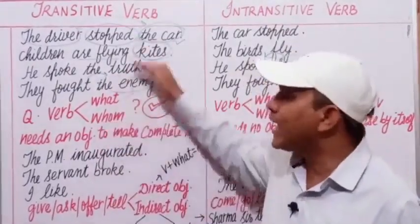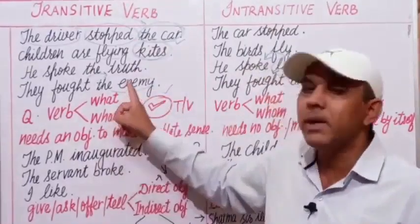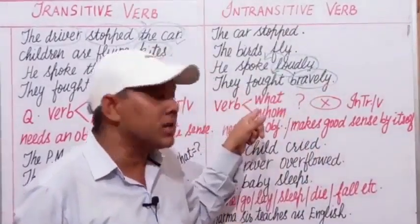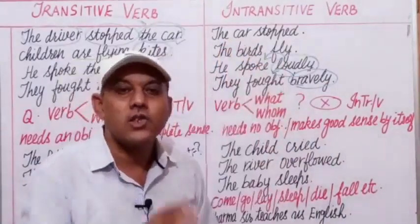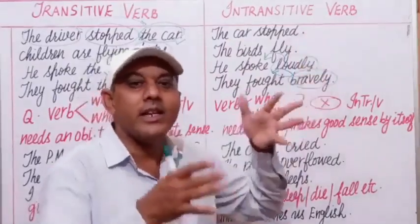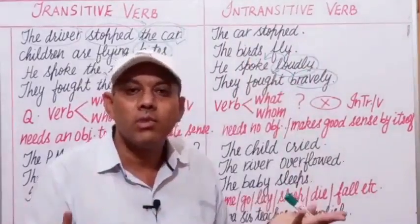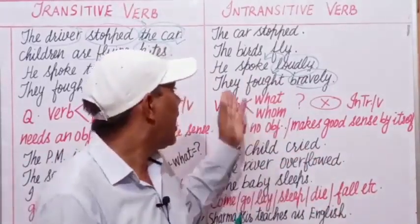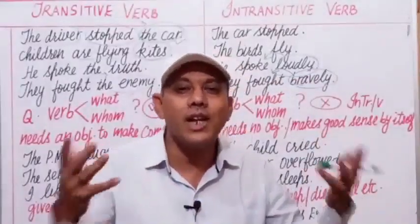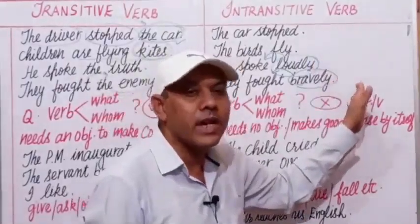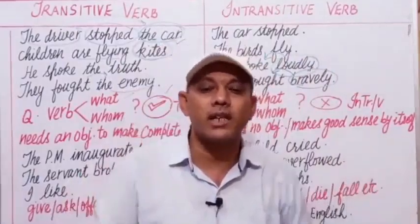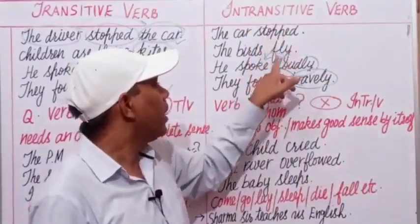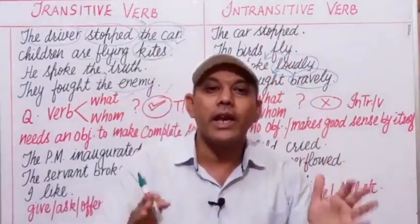But when we get no answer by framing such questions, the verb is intransitive. 'The car stopped — stopped what?' No answer. 'The birds fly — fly what?' No answer. 'He spoke loudly — spoke what?' No answer. 'They fought bravely — fought whom?' Still no answer. It means there is no object to these verbs, and these sentences need no object to complete their meaning. So the verbs stop, fly, spoke, and fought are used intransitively here.